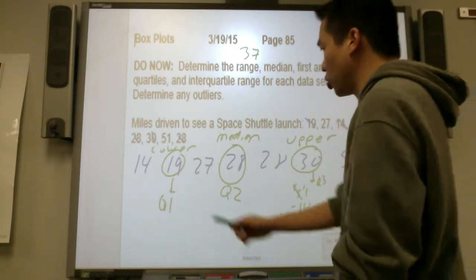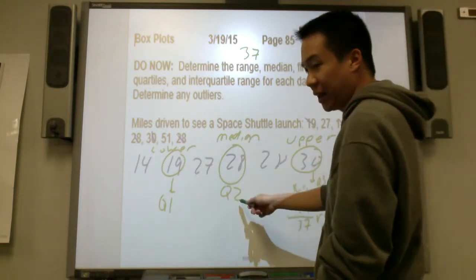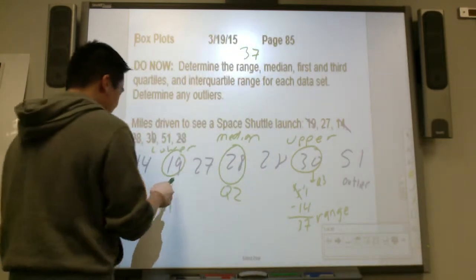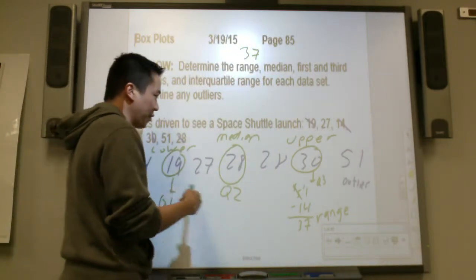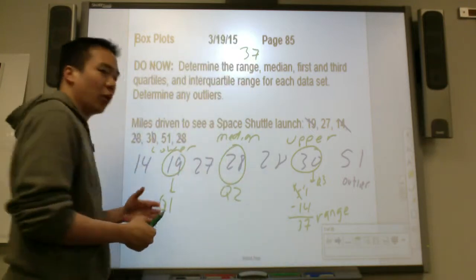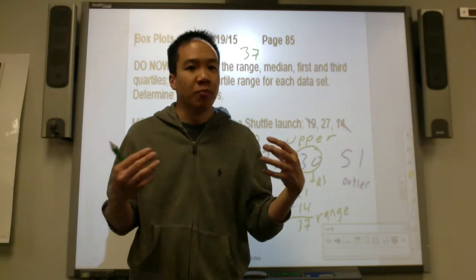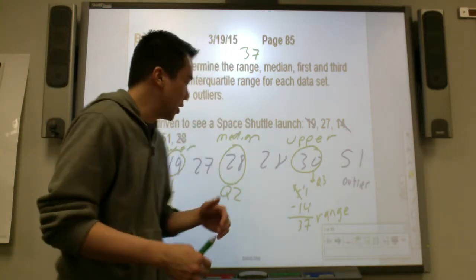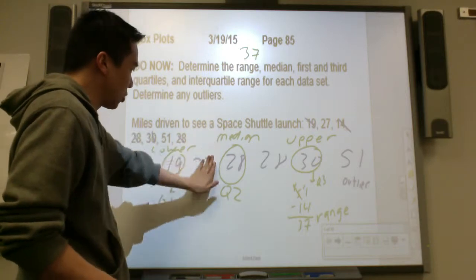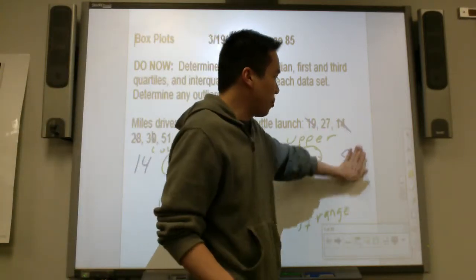So we found quartile 1, quartile 2, and quartile 3. Quartile 2 is the median of the whole set. Quartile 1 is the median for the lower half. Quartile 3 is the median of the upper half. Quartiles break the data into fourths, or 25% each — 25% here, 25% here, 25% here, 25% here.